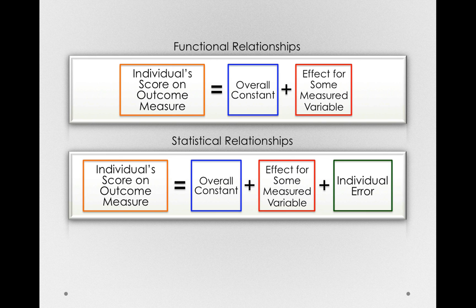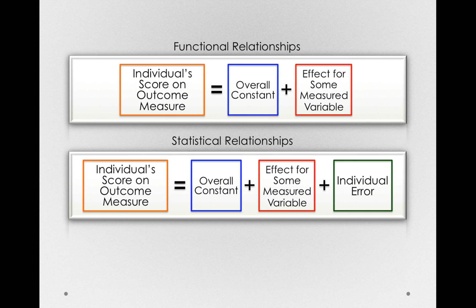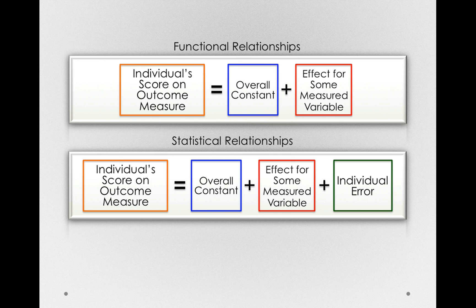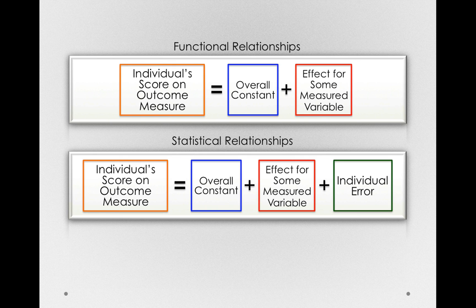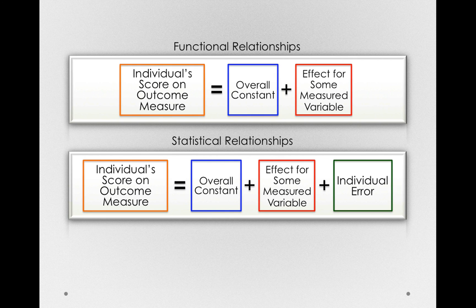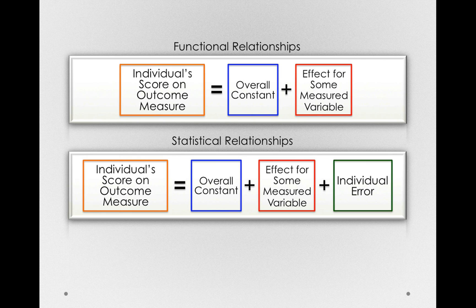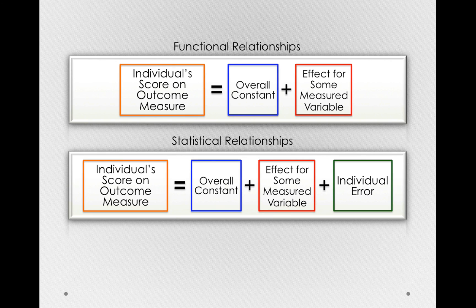And it's that individual error that's going to give us a benchmark to understand how big the effects we actually measure are. Knowing how much individuals still vary within their groups tells us something about whether those group differences, those treatment offsets, are actually reliable. Whether they actually exist in the population even though we've measured them in our sample. Remember, we're always going to have to deal with sampling error. And so that individual error in our mathematical models is going to be a reflection of sampling error. And we'll be able to know on the basis of that individual error whether the offsets we measured for our explanatory variables actually reflect something true in the population or are simply the consequence of sampling error.